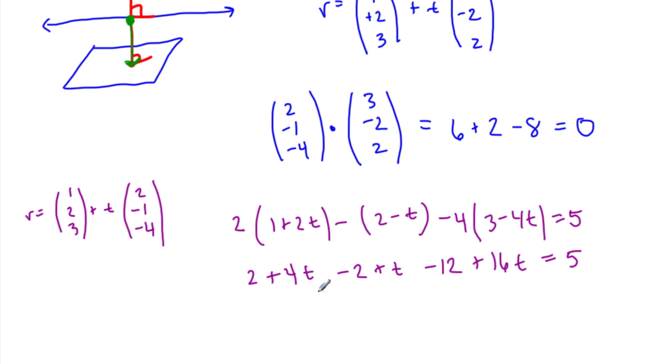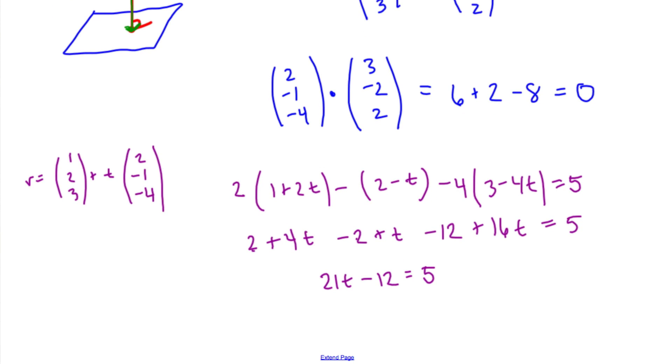Our t's will be, that's five t plus sixteen t is twenty-one t, and then those will cancel, and I also have a minus twelve, equals five. So then add twelve, I have seventeen, so twenty-one t is equal to seventeen, so then t is equal to seventeen over twenty-one.